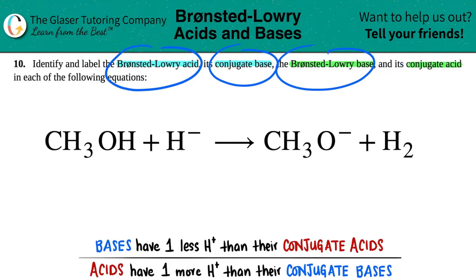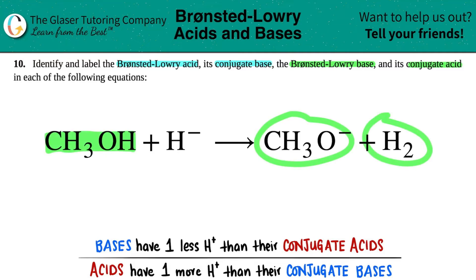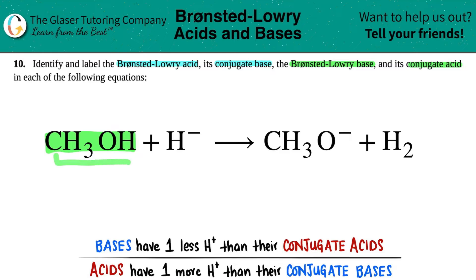The easiest way to do this is to first link up your pairs. I like to start from left to right, so I'm going to highlight CH3OH. On the other side of the yield sign, you have to pick the right molecule that goes with that pair — they have to look very similar. CH3OH would go with CH3O; they're very similar, just the difference of a hydrogen.